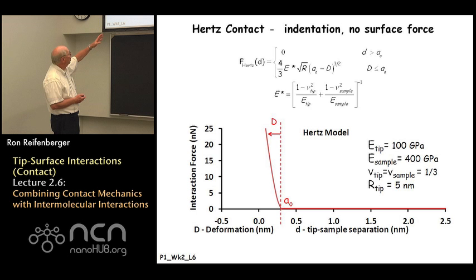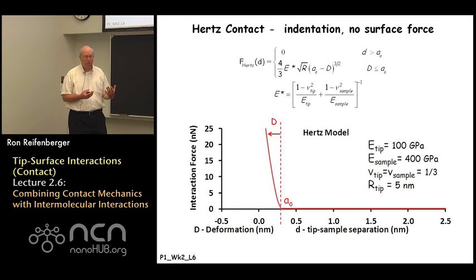What you can see is the deformation parameter is measured from the position a0 indicated by this vertical dashed line. Very often the deformation is given a negative value to indicate that the tip is indenting into the substrate. Basically for applied forces between roughly 0 and 25 nN, the deformation or indentation of the tip into the substrate for these particular parameters follows the red curve. We typically have on the order of 0.3 to 0.4 nm indentation when the applied force is about 25 nN. This would be the result for the Hertz contact model.